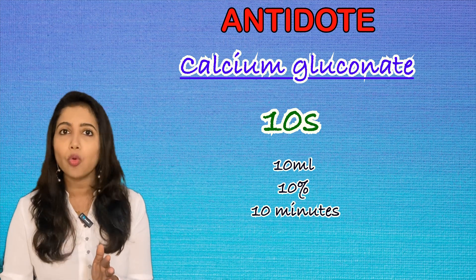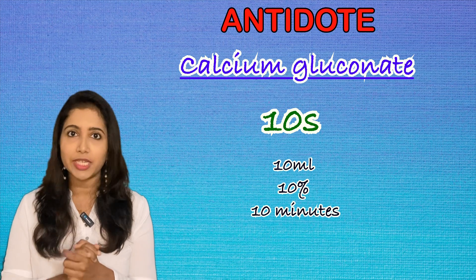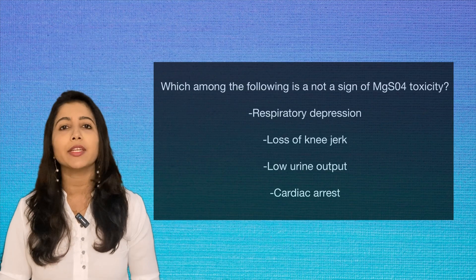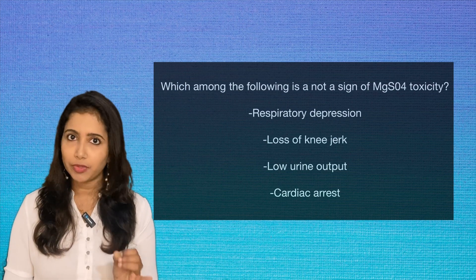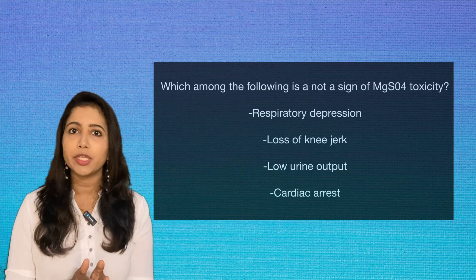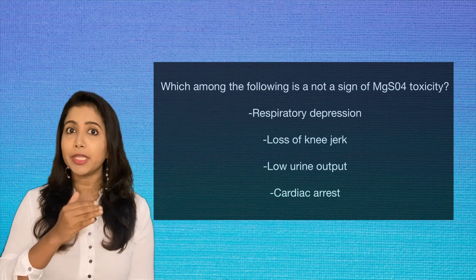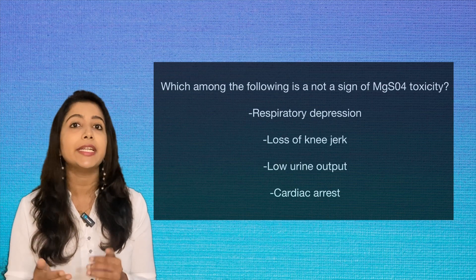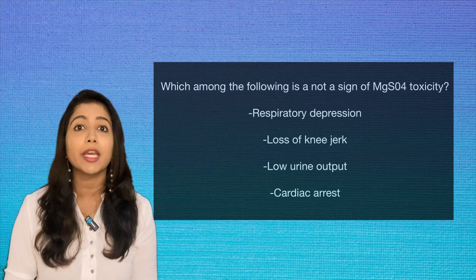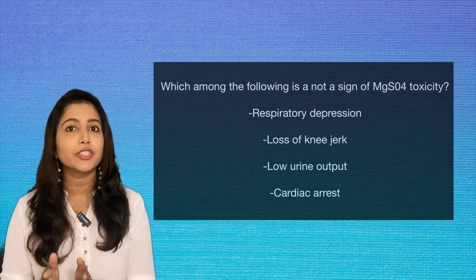Calcium gluconate is given slow IV: 10 mL of 10% over 10 minutes. Now, coming back to our previous questions: the first sign of toxicity is loss of knee jerk. Regarding the second question — loss of knee jerk, cardiac depression, and respiratory paralysis are all effects of magnesium sulfate toxicity. However, oliguria is not a direct effect of toxicity. Oliguria occurs because severe preeclampsia itself can cause renal damage. Since magnesium sulfate is excreted through the kidneys, we monitor urine output closely to watch for potential toxicity accumulation.